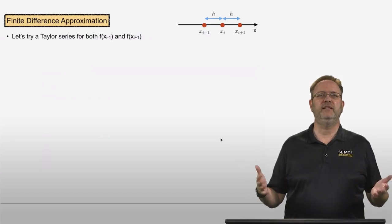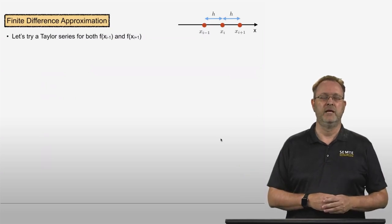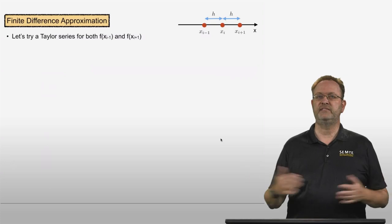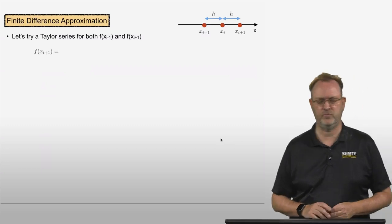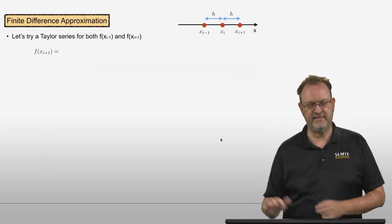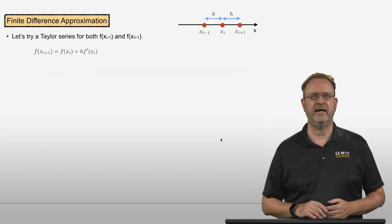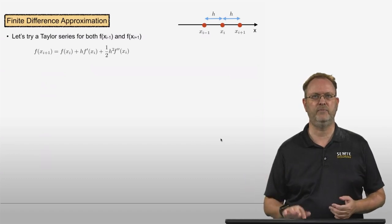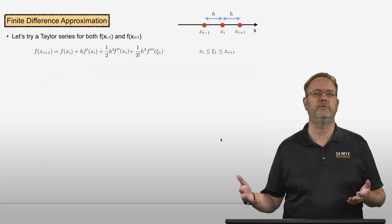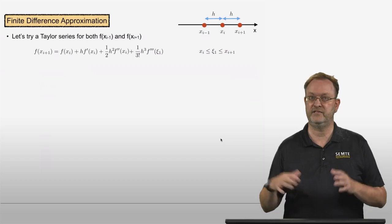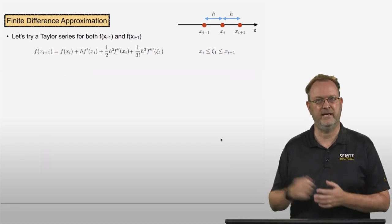In a prior video, we did Taylor series expansions for the neighboring points. So let's try Taylor series expansions for both points: f of xi minus 1 and f of xi plus 1. The Taylor series expansion to the plus side: f of xi plus 1 is equal to f of xi plus h times f prime at xi, plus one half h squared f double prime at xi, plus one over 3 factorial h cubed times f triple prime, evaluated at some unknown location psi 1 between xi and xi plus 1.